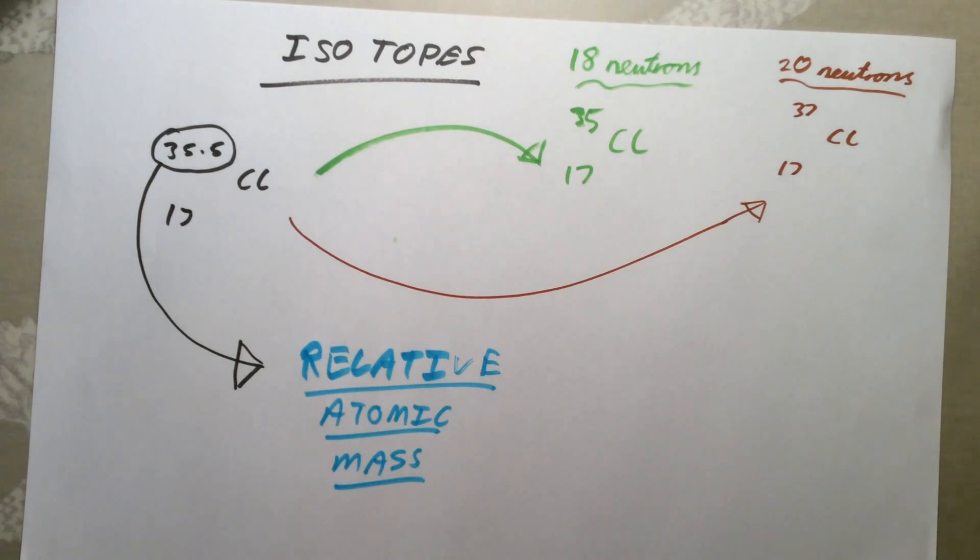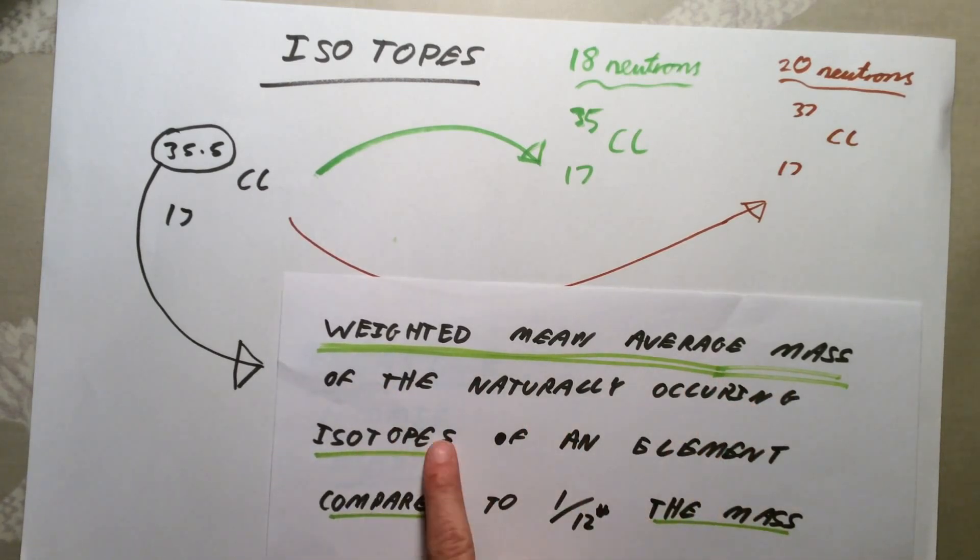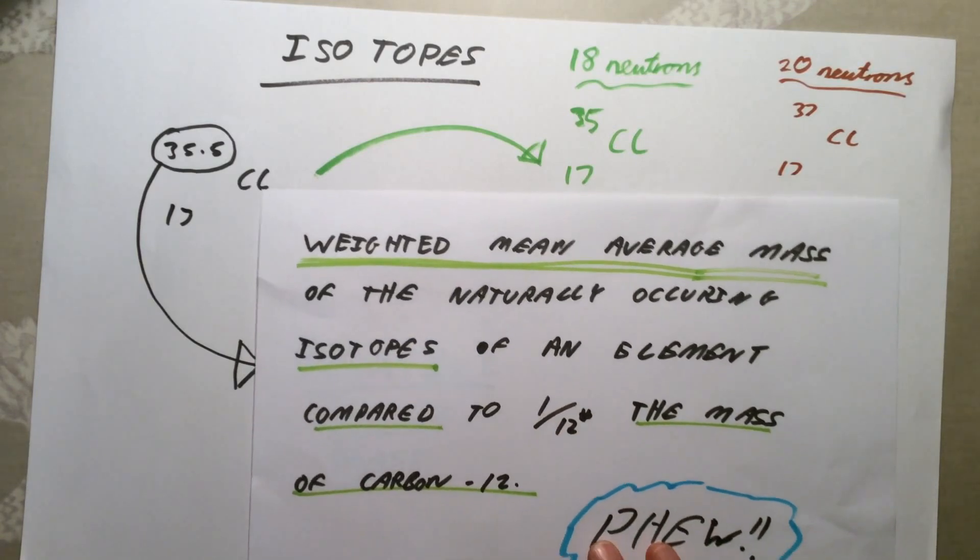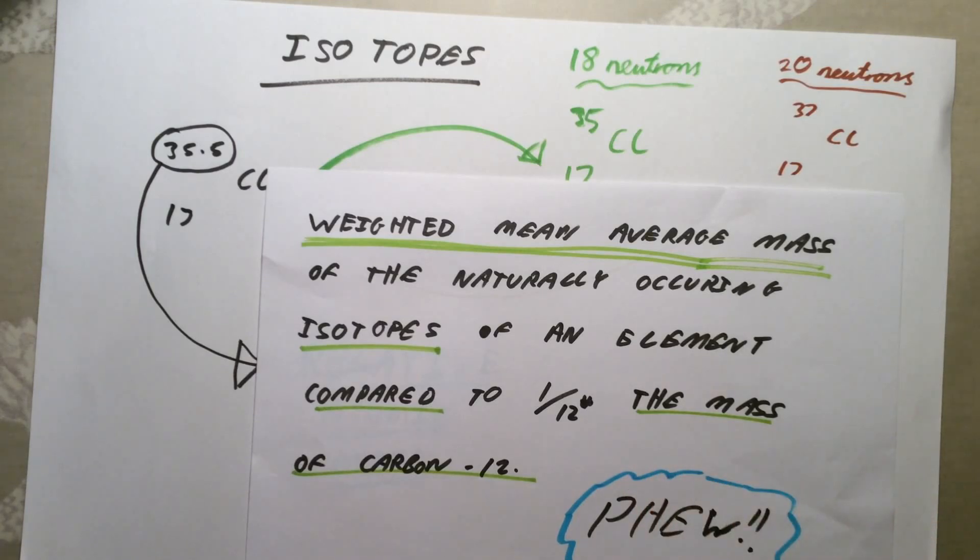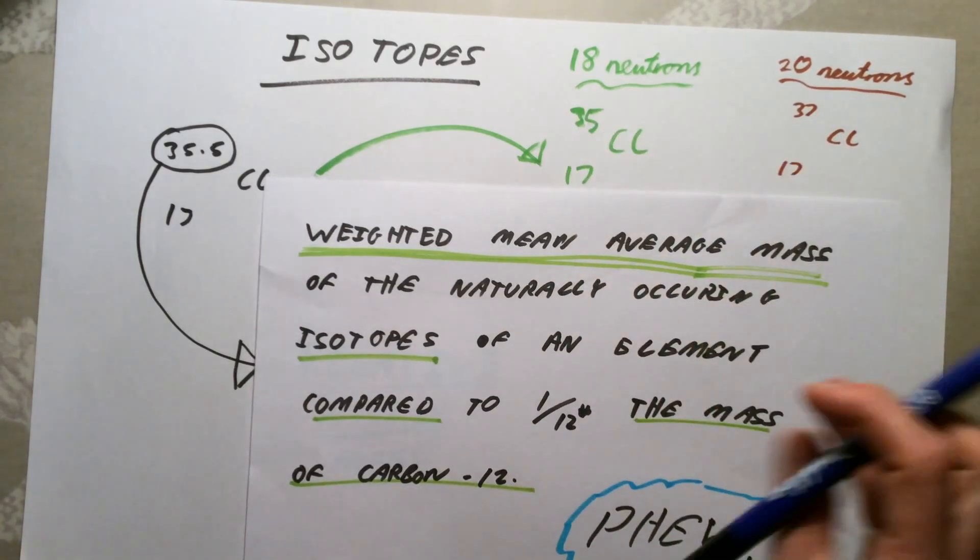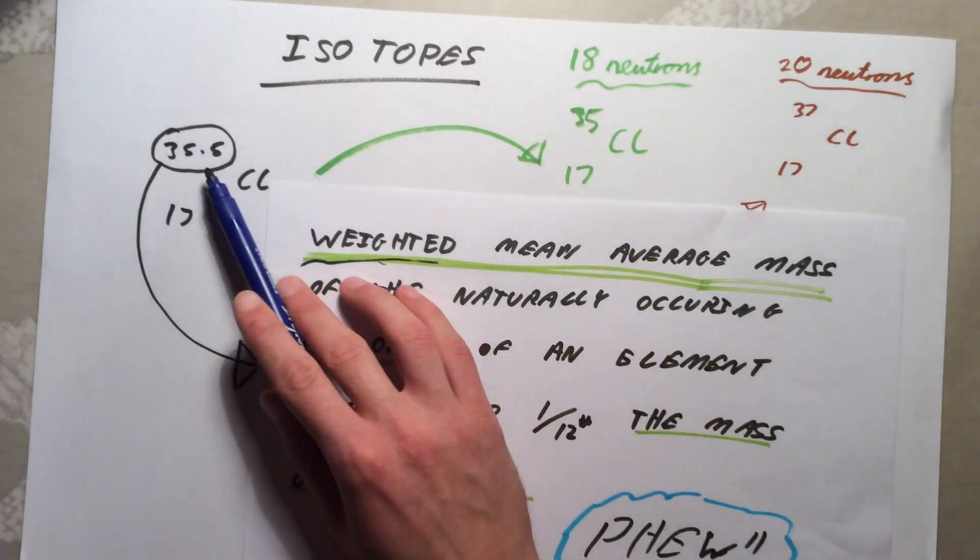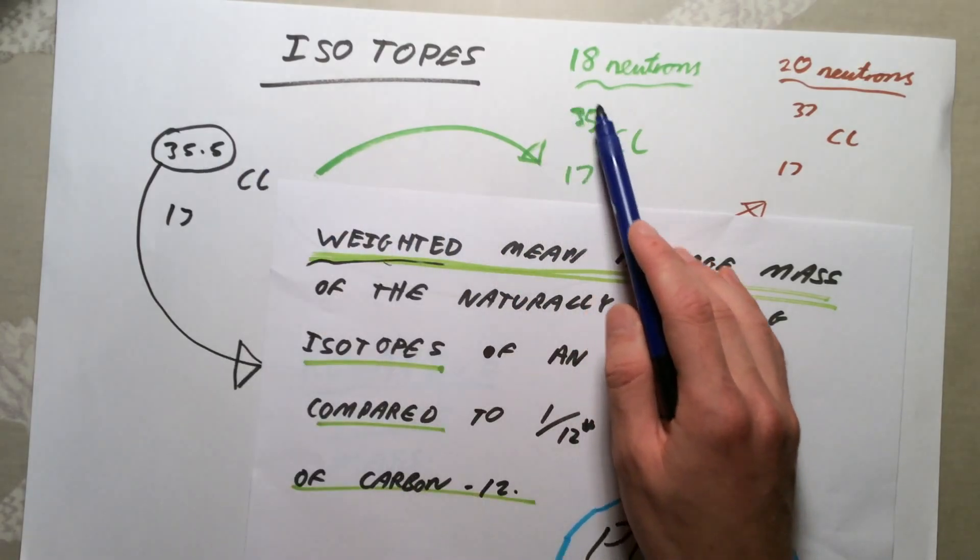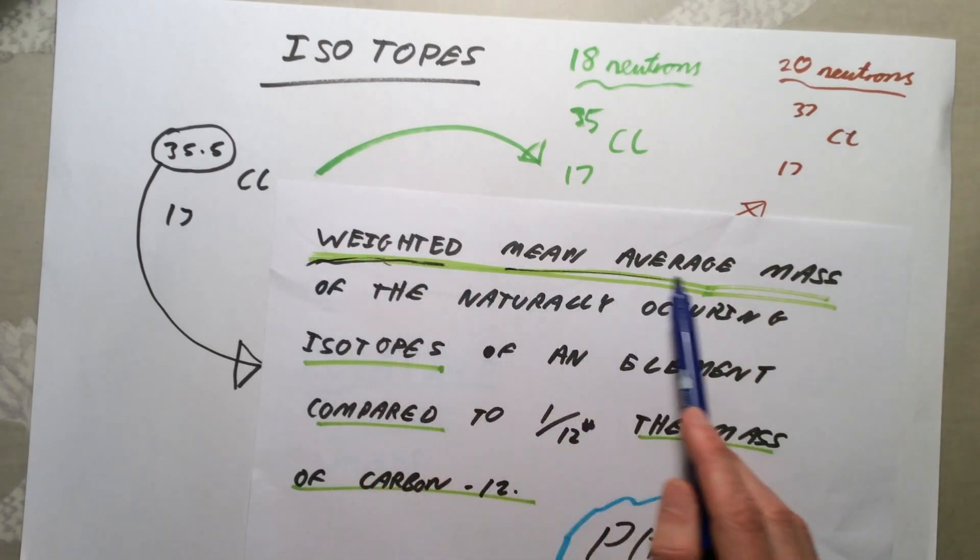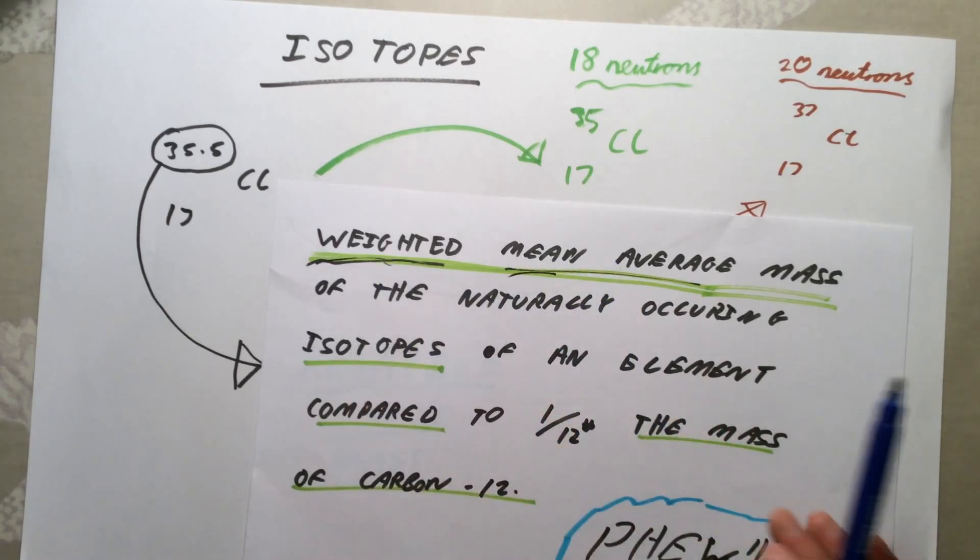Our definition is this: relative atomic mass is the weighted mean average mass of the naturally occurring isotopes of an element compared to 1/12 the mass of carbon-12. So a pretty big mouthful to be honest with you. What this actually means is we don't just take the average of these isotopes, because clearly the average of these two, 35 and 37, would be 36. We have to take a weighted average. What this means is we take into account how much of each one there is. If you look back to here, 35.5, the weighted part means we must have more of this 35, 17, Cl than we do the 37, 17, Cl. That's where the weighted part comes in. The mean average, just, you know, your mean in maths, you add them up, divide by the number you've got, but it has to be a weighted version.